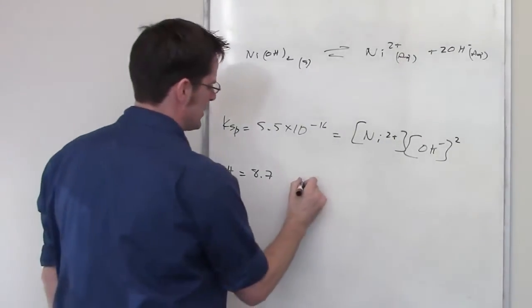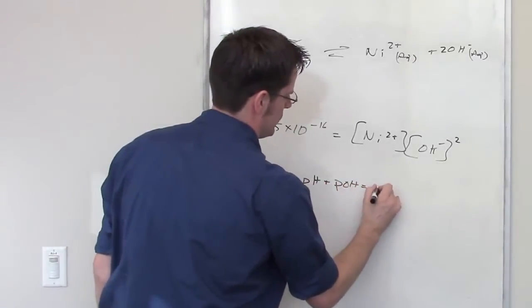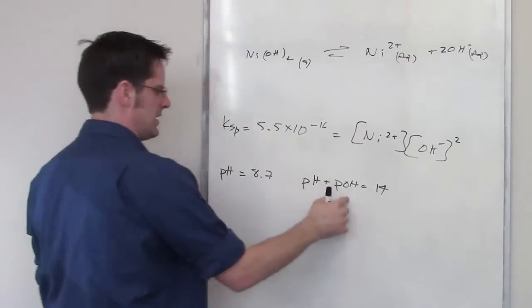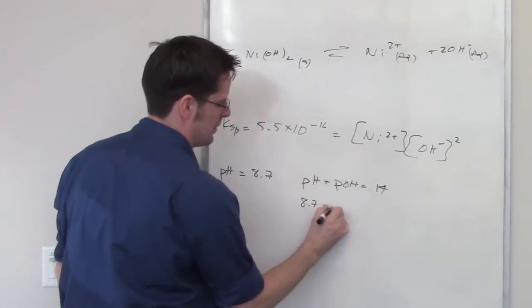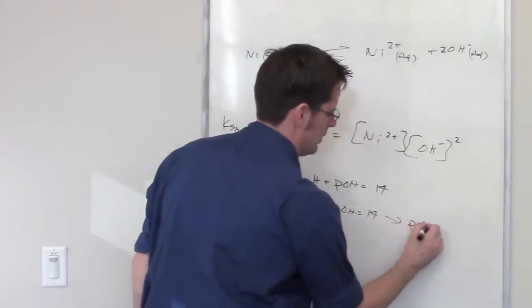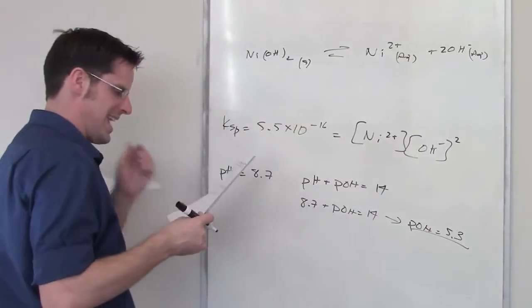Foremost is this. We've got this old equation that says that pH plus pOH is equal to 14. I've got pH. Can I solve for pOH? I've got 8.7 plus pOH equals 14. pOH, then, is going to equal 5.3. Why in the world do I care about that?